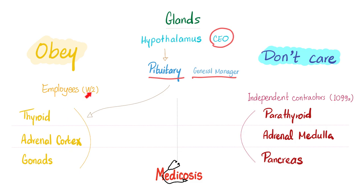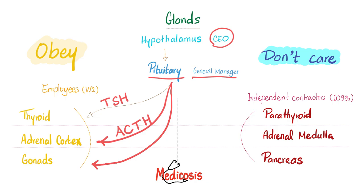The pituitary gland can influence the thyroid gland by secreting TSH, or thyroid stimulating hormone. The same pituitary gland can stimulate the adrenal cortex by secreting adrenocorticotropic hormone, or ACTH. The pituitary gland can also stimulate the gonads by secreting follicle stimulating hormone as well as luteinizing hormone. So the employees of the general manager include the thyroid gland, the adrenal cortex, and the gonads.